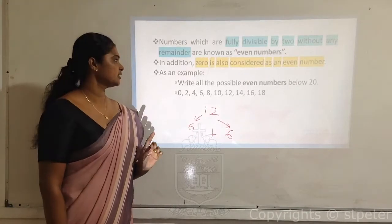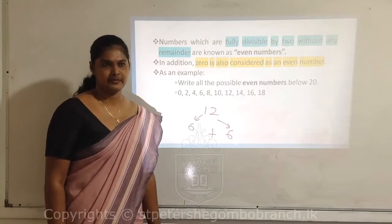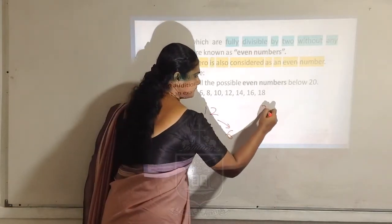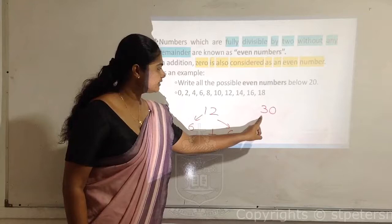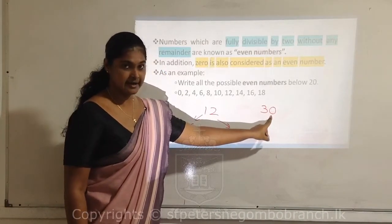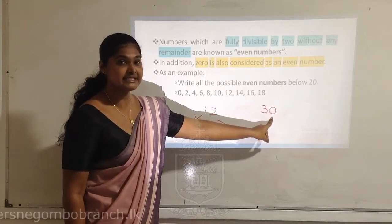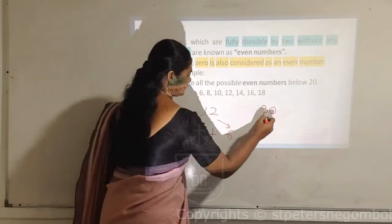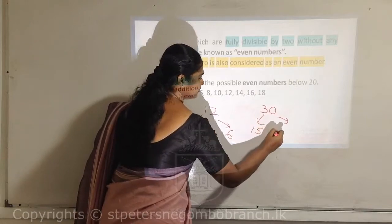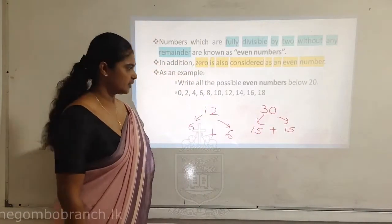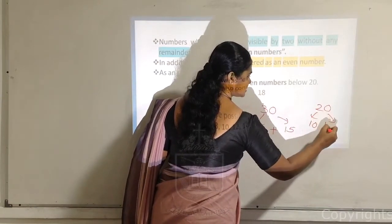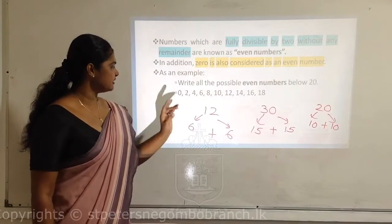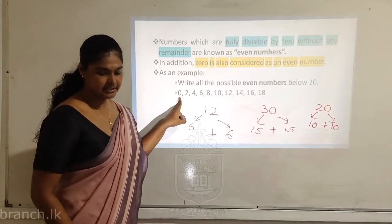There is a special thing: zero is also considered as an even number. Can you divide zero into two parts? Numbers are made with digits, and numbers where the last digit is 0 — or multiples of 10 — can easily be divided into two groups evenly. For example, 30 ends with zero and 20 ends with zero: 10 plus 10 makes 20. So even if a number ends with zero, we consider it as an even number.